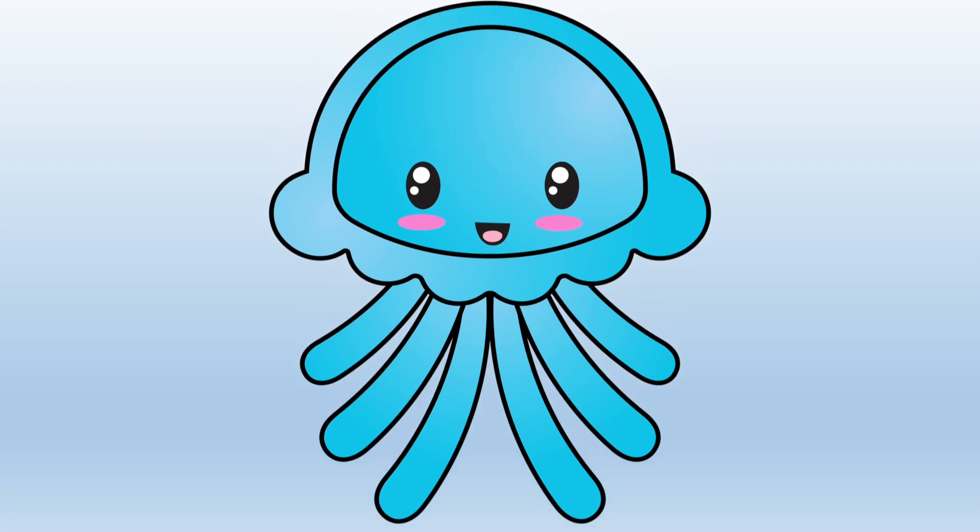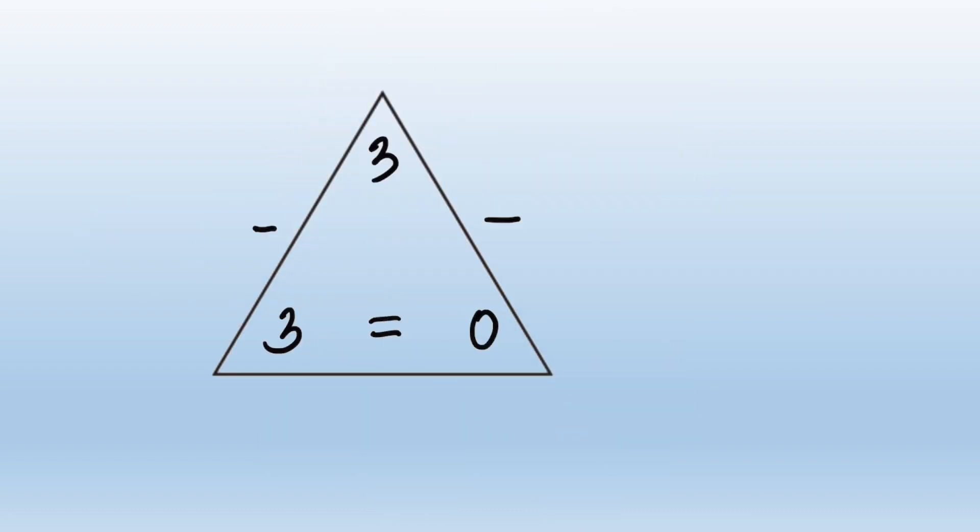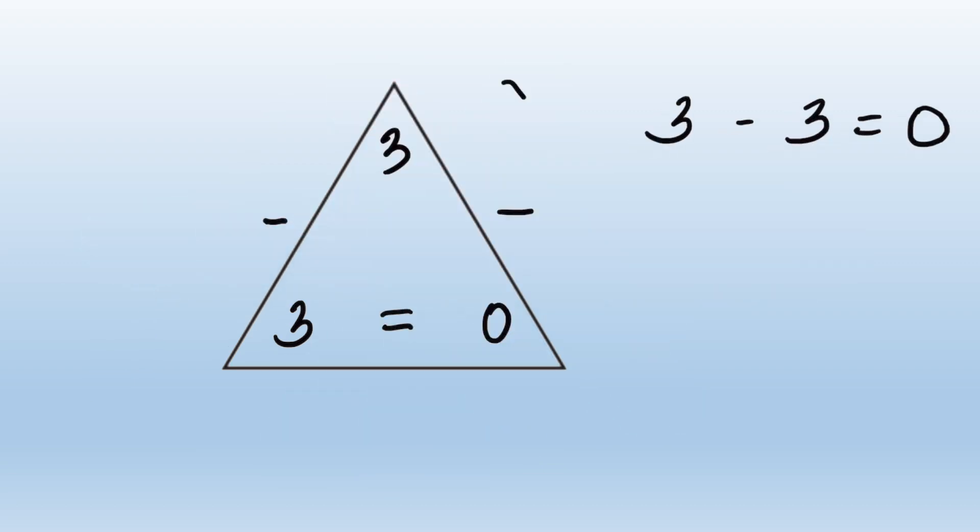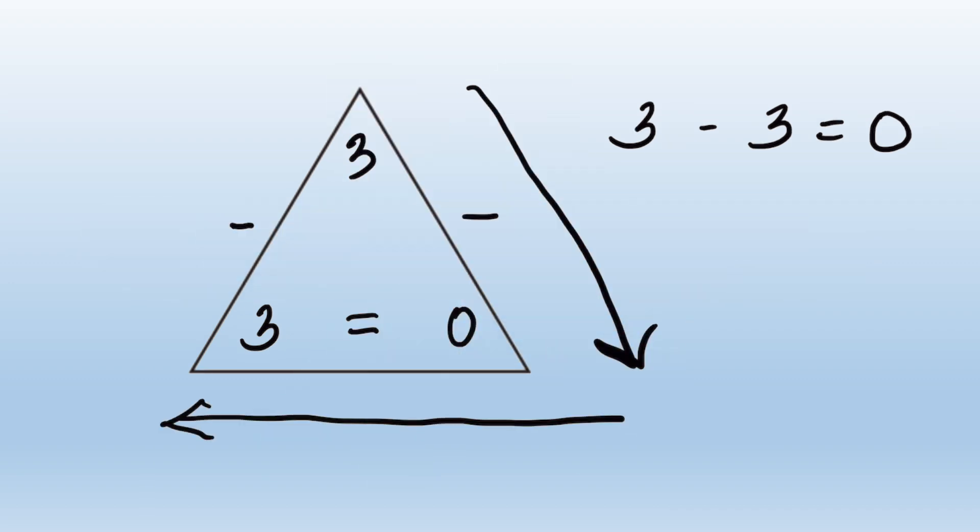Next, he thought he might try subtraction. Start at the top, go down and over. Three minus three equals zero. And go down the other way. Three minus zero equals three.